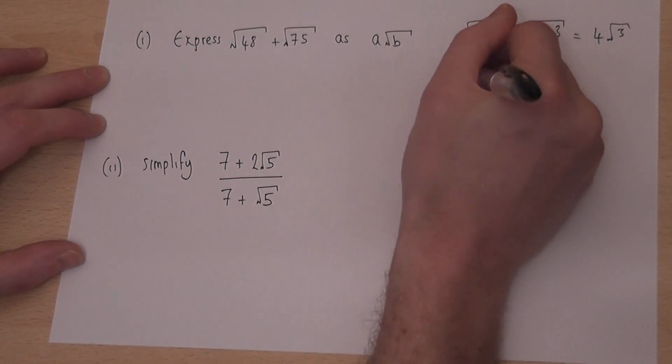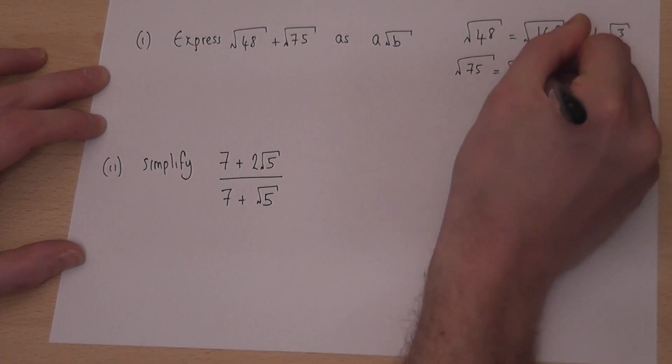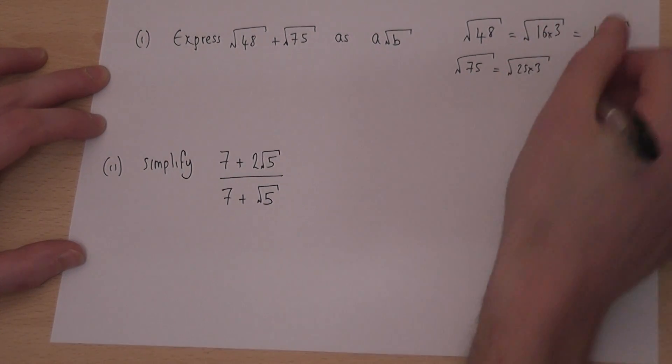And root 75, the square factor is 25, so it's 25 times 3. Root of 25 is 5, so it's 5 root 3.